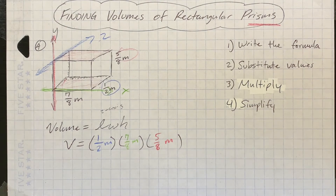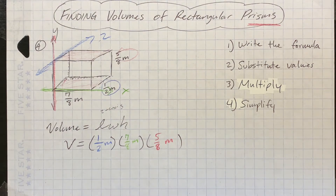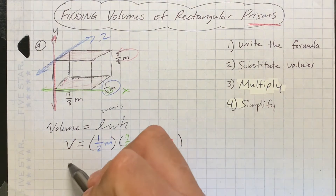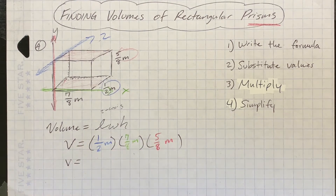This works with whole numbers too, but right now we're working with fractions. Remember, unlike adding and subtracting fractions, when you multiply fractions the denominator does not have to be the same. You can multiply your numerators straight across and multiply your denominators straight across.